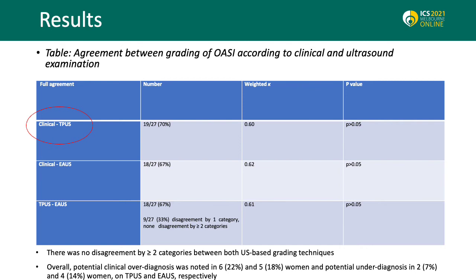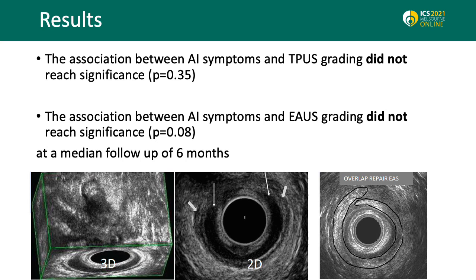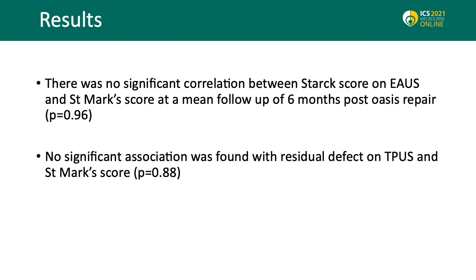Another relevant finding was that transperineal ultrasound could not discriminate between 3C and 4-degree tears, while endoanal ultrasound could. Full agreement between clinical and endoanal ultrasound, and between endoanal and transperineal-based grading of OASI, was noted in approximately 70% of women with a weighted kappa of 0.6. Overall, there was no disagreement by two or more categories between both ultrasound-based grading techniques and clinical assessment.